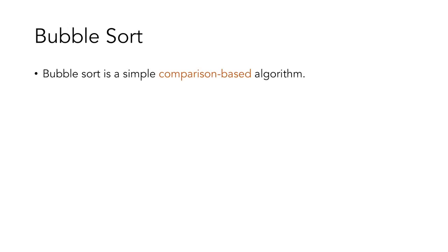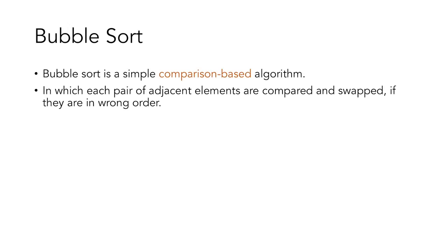In this video, we will learn about bubble sort. Bubble sort is a simple comparison-based algorithm in which each pair of adjacent elements are compared and swapped if they are in the wrong order.